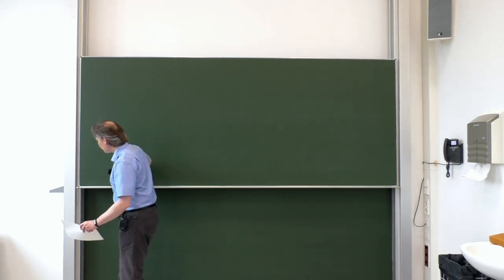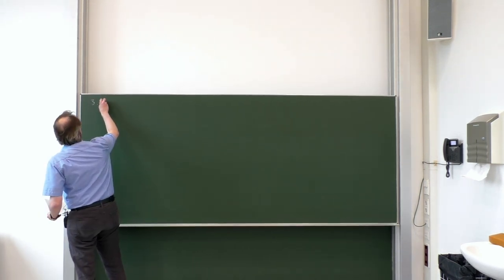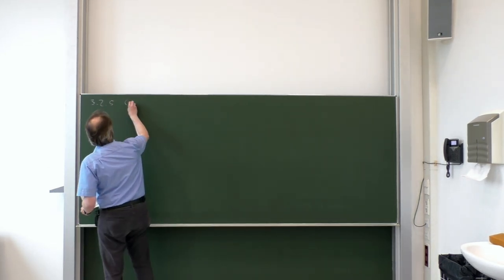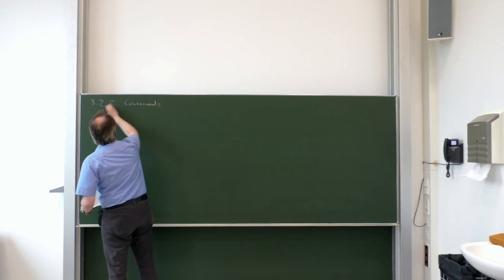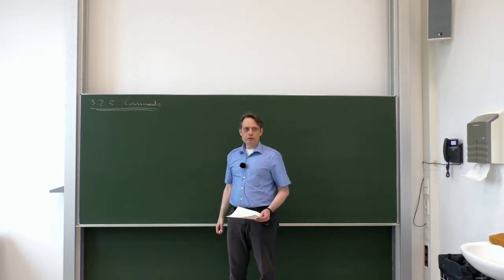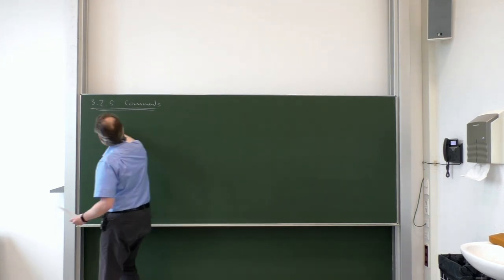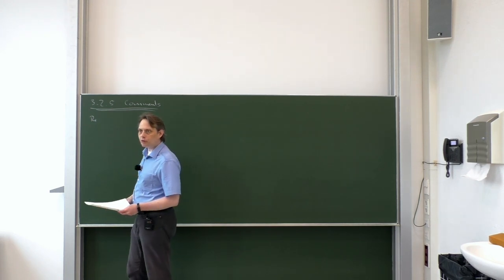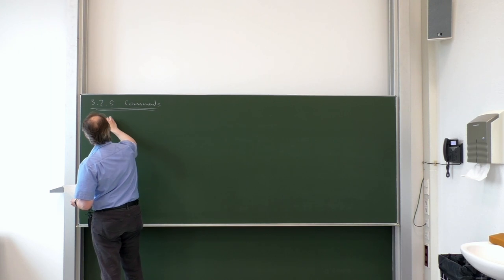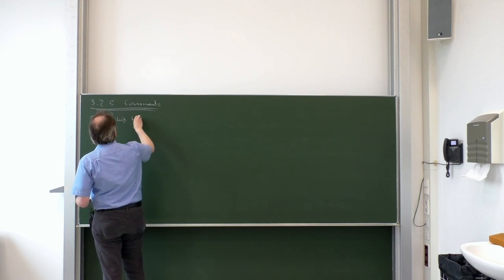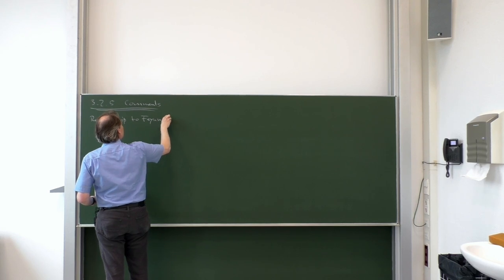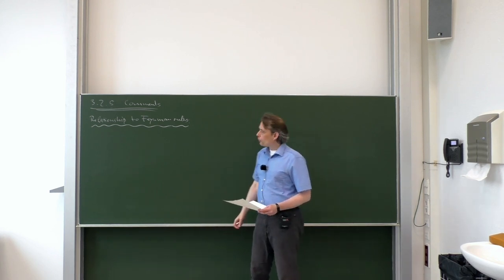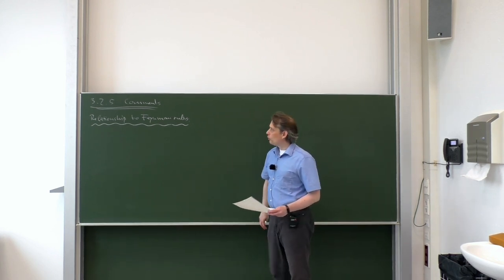Let's continue with our effective field theory lecture. Continuing from Monday's discussion, let me give some comments on the application of the method of regions to our example. After we have performed the method of regions, we can now look at the result and relate it to Feynman rules.